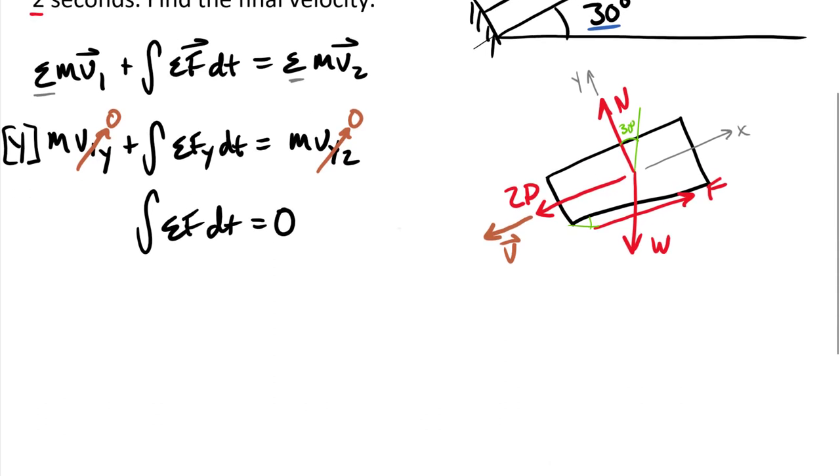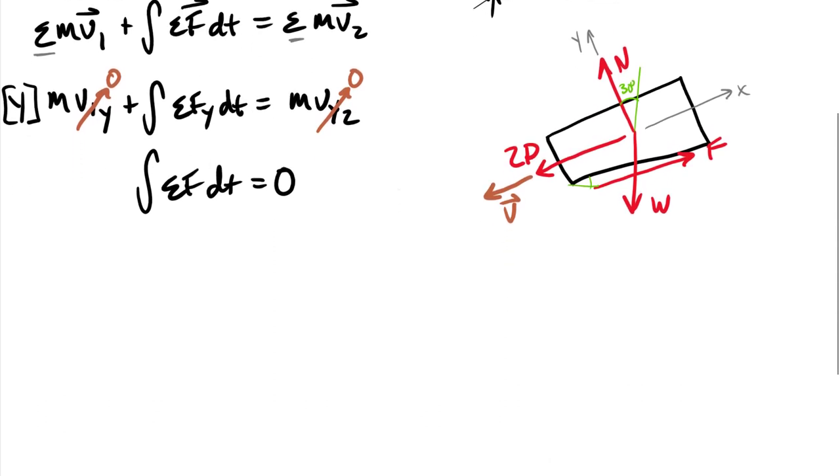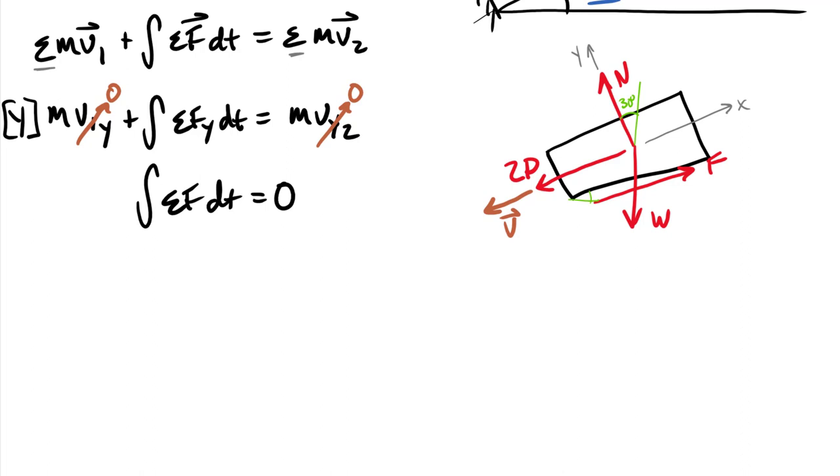And it would also work out that if our forces were time constant, that integral of the sum of forces dt is basically going to be sum of forces times time. And we could divide the time off both sides, we could end up with the exact same equation we had for statics, sum of forces equal to zero. Now in this case, we had that P force as time variable, so I do need to leave that integral so that I can compute that.